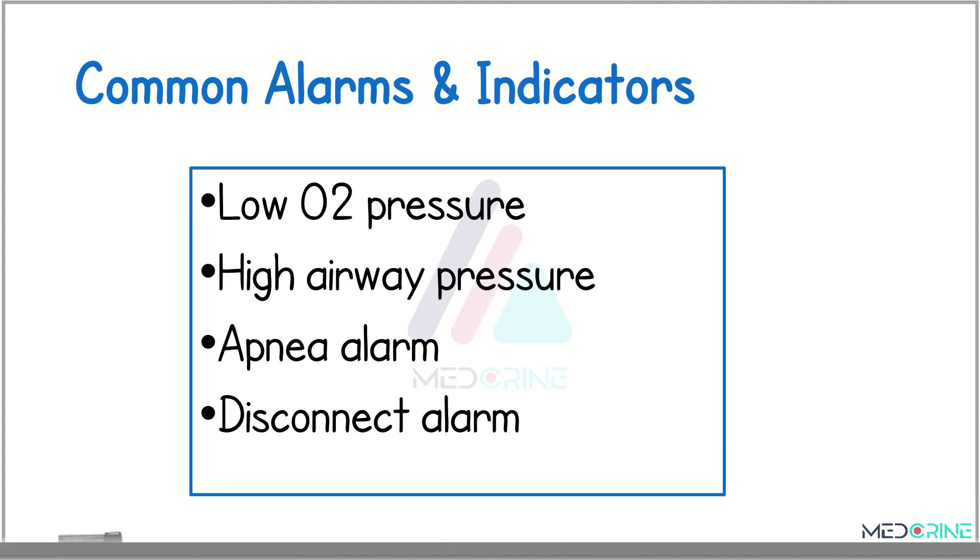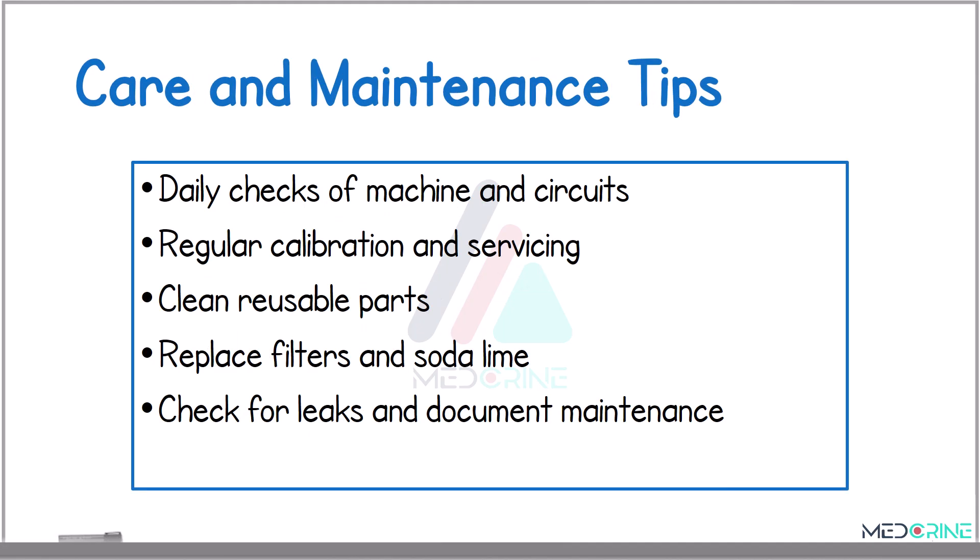The common alarms in anesthesia machines include a low-oxygen pressure alarm, a high airway pressure alarm, an apnea alarm, and a disconnect alarm. All of these are promptly addressed to ensure the patient's safety.